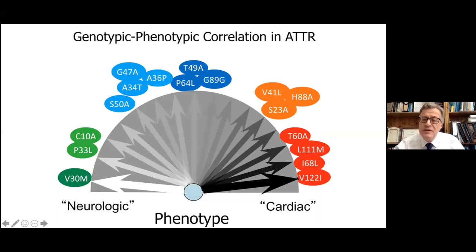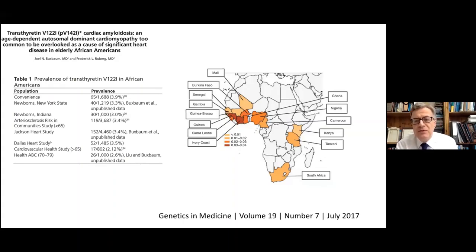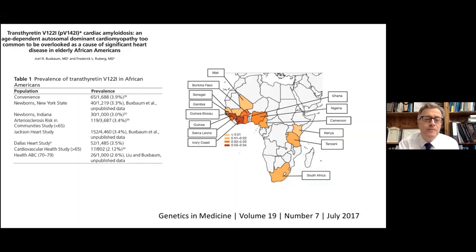With regard to cardiac phenotypes, there's one in particular — the V122I mutation or variant — which is probably underestimated in clinical practice. We know that maybe somewhere between three, four, maybe as much as five percent of people of Black African ancestry carry this variant. I'll come back to this variant later because I think it could be telling us something very interesting about the mechanism of disease in hereditary TTR amyloidosis.